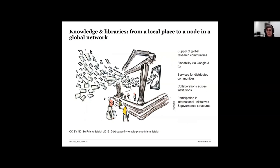A big shift for libraries is that in the context of open science and digital material, we are no longer relevant only as a local place — here in Basel — but we become a node in a global network. If we are making things available on a global scale, everything we do should be findable on a global scale, and we therefore need collaborations across institutions worldwide.